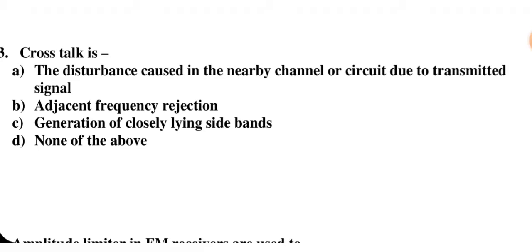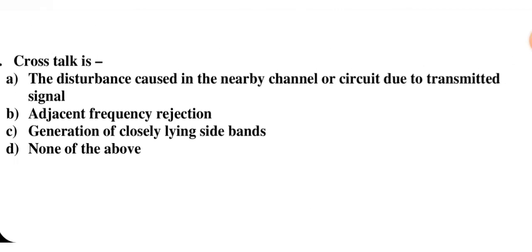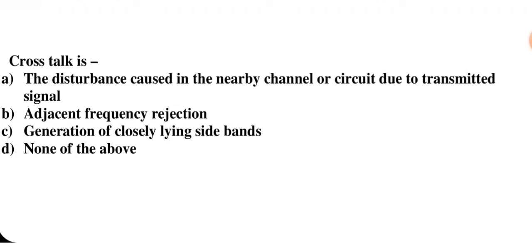Cross talk is the disturbance caused in the nearby channel or circuit due to the transmitted signal. The options are: disturbance in nearby channel due to transmitted signal; adjacent frequency rejection; generation of closely lying sidebands; or none of the above. The correct answer is A — disturbance caused in the nearby channel due to the transmitted signal.